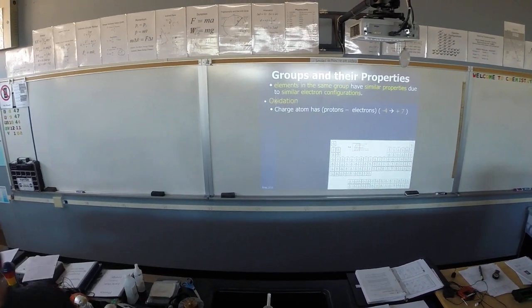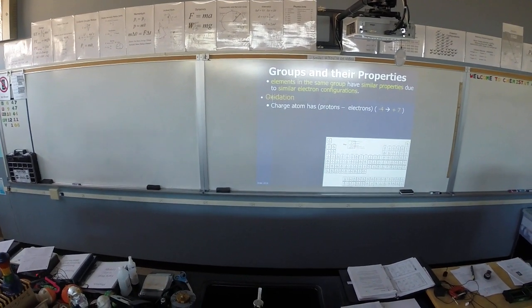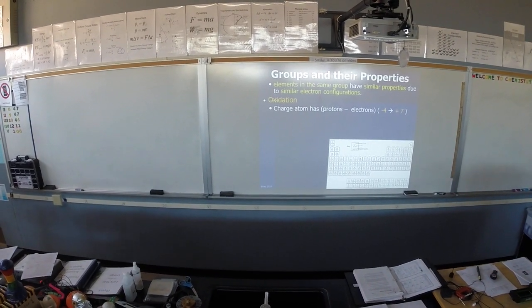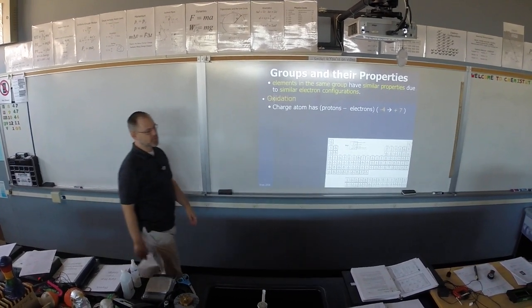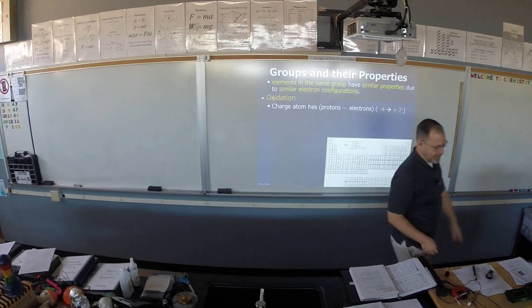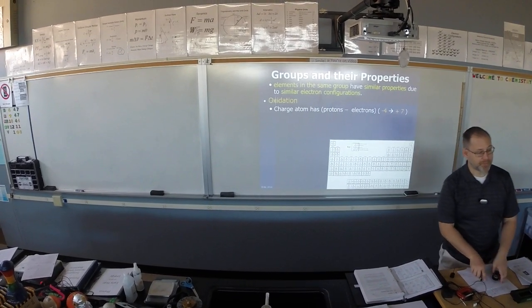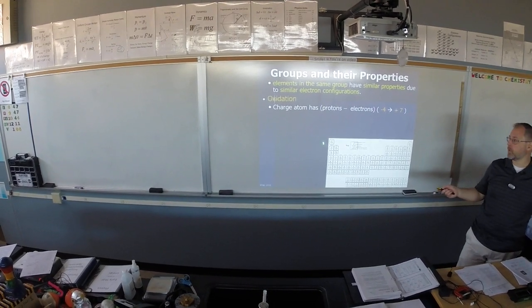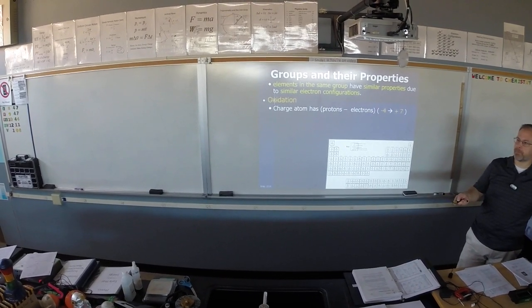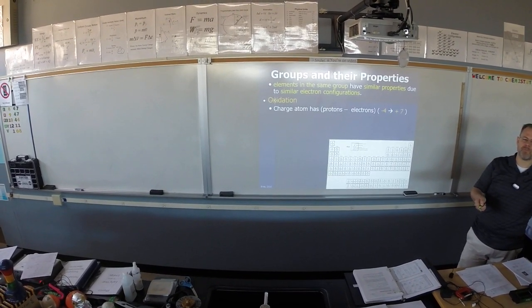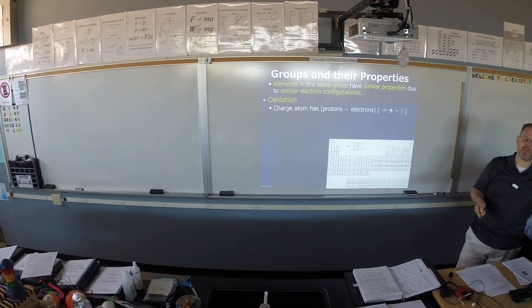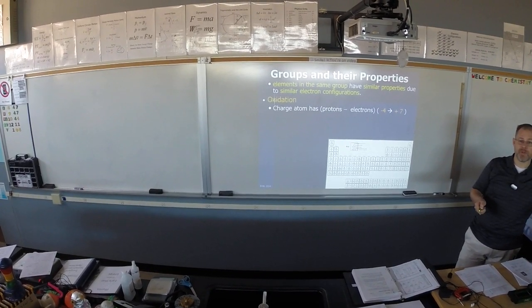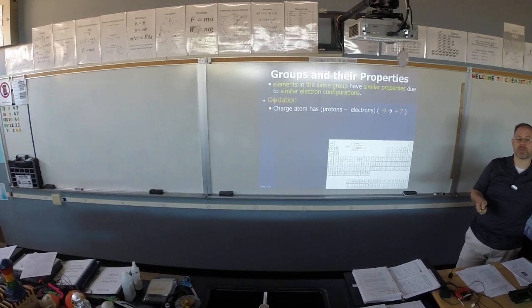Oxidation is the charge that an atom or an ion has when it fills its octet, when it completes its octet. Follow the little green dot. Group one elements have how many valence electrons? One. So lithium, sodium, potassium — they have one valence electron.